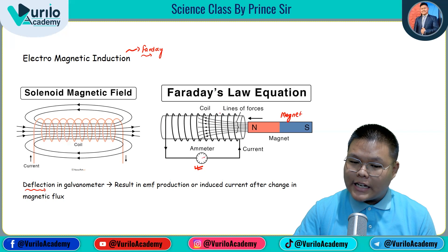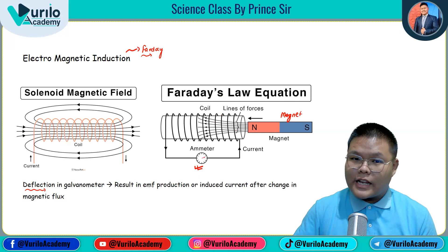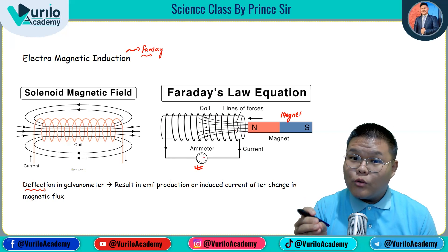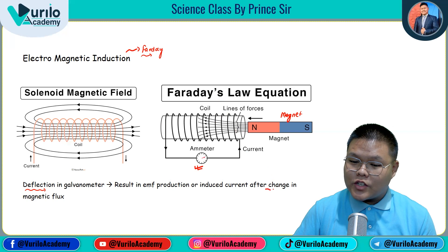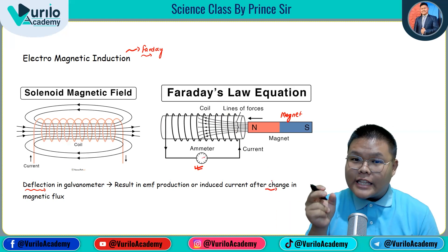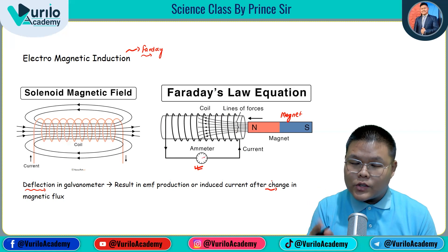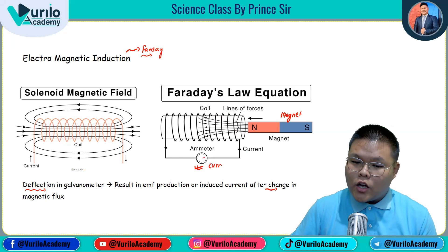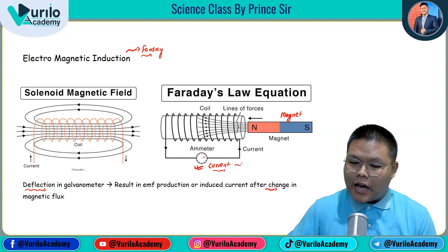This magnetic line of force is called magnetic flux. When the magnet is brought near or moved away, the magnetic flux through the solenoid changes. This change in magnetic flux is what causes electromagnetic induction — the current is produced because the magnetic flux changes. When there is a change in magnetic flux, an EMF (electromotive force) is induced and current flows.